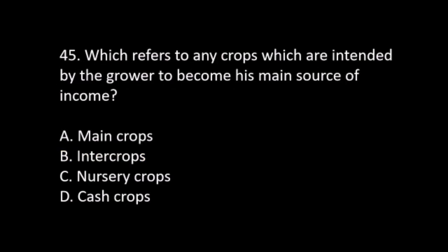Number 45. Which refers to any crop which is intended by the grower to become his main source of income? A. Main crops. B. Inner crops. C. Nursery crops. D. Cash crops. The answer is A. Main crops.